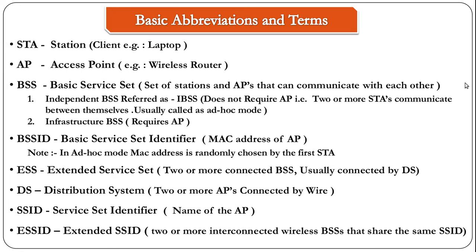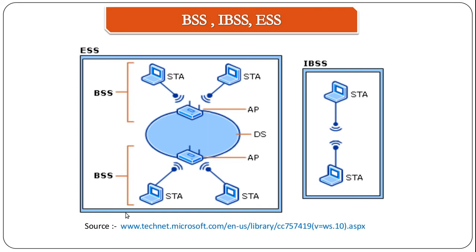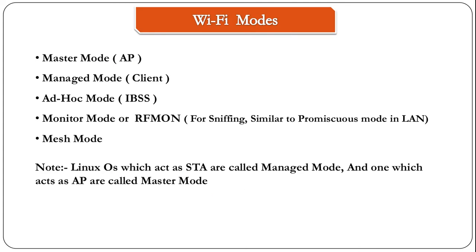SSID is what you see in your network manager as the available access points in your area. The final abbreviation is ESSID — extended service set identifier — meaning two or more interconnected wireless BSS that have the same SSID. To give a clear picture, I took some screenshots from microsoft.com: you can see two clients connected to an access point forming a BSS, two BSS connected by LAN forming an ESS, and an independent BSS with no AP where stations communicate between themselves.